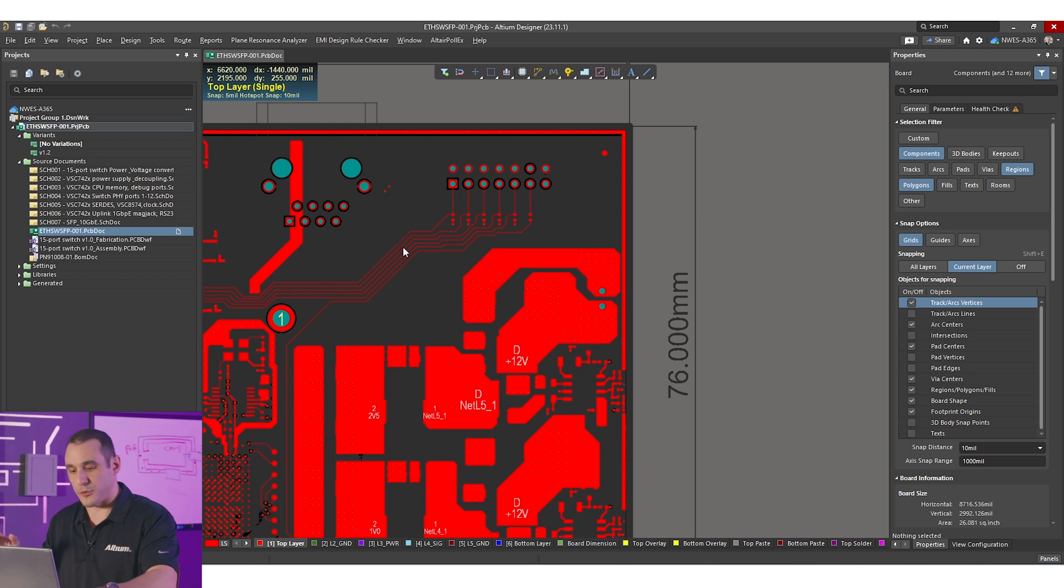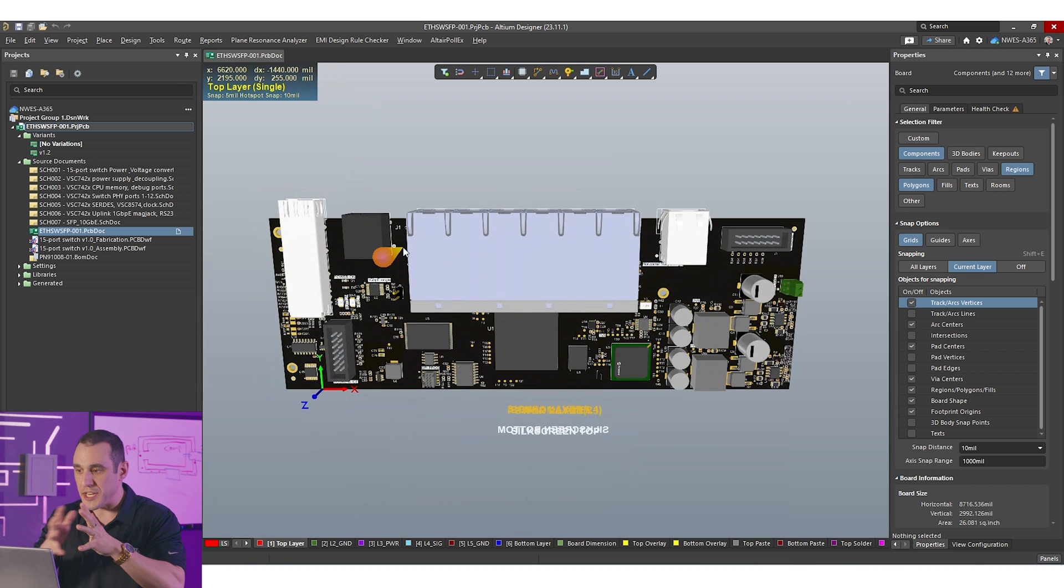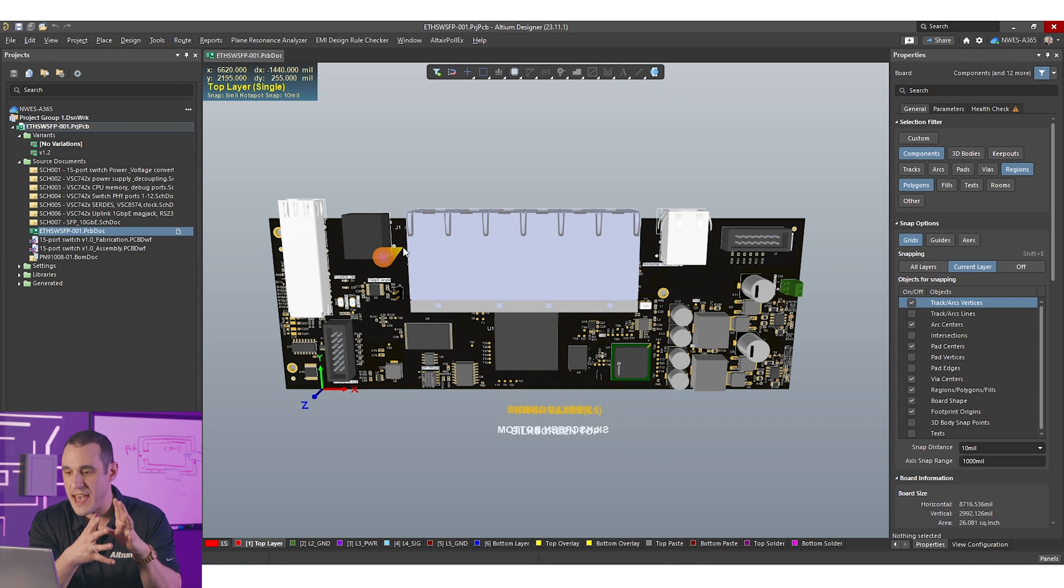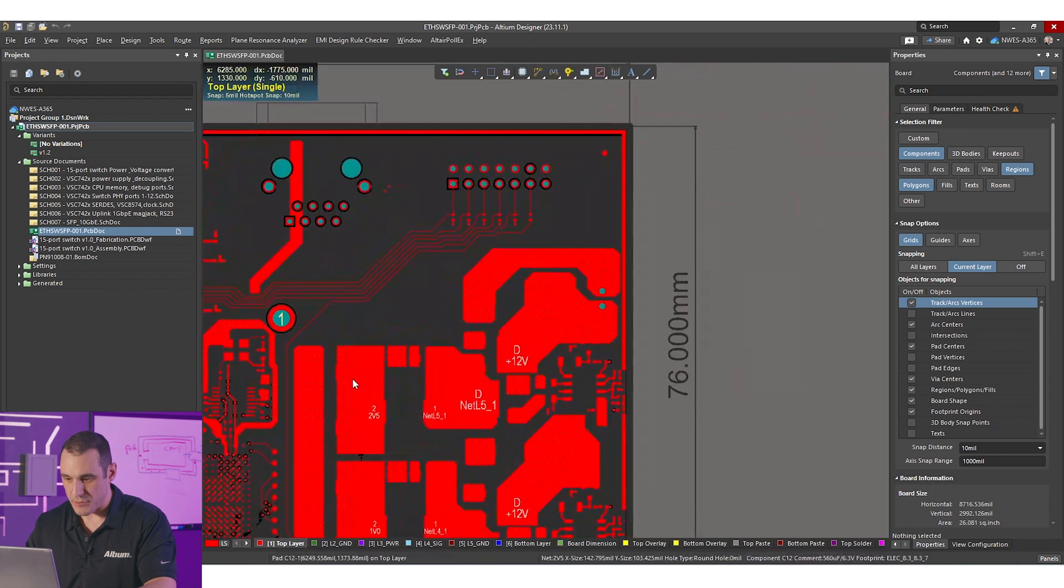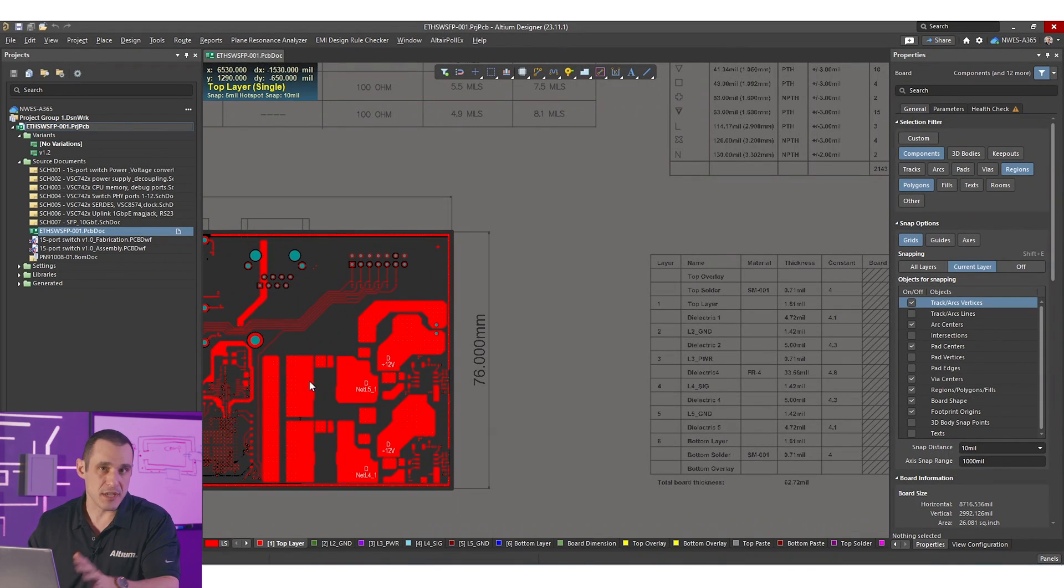Now this isn't exposed through the solder mask when we look in 3D and the reason is that we're not planning to use this in a metallized enclosure. However we could of course expose that through the solder mask if we want to, then that would give us that connection to a metallized enclosure if we need it.